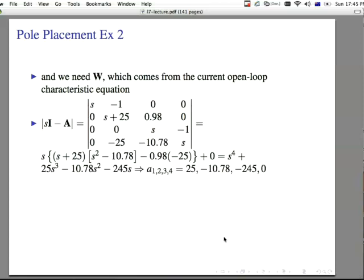We need w, which comes from the current open loop characteristic equation. And so let's find that. The open loop characteristic equation is given by the determinant of si minus a. And so our s's are down the diagonals, and we reverse the signs on the terms to get our minus a in there. And finally, we end up with s to the fourth plus 25 s cubed minus 10.78 s squared minus 245 s. Notice that we don't find the roots. We actually just look at the characteristic equation. We're not going to take the roots of this quartic. We're just going to look at the coefficients.